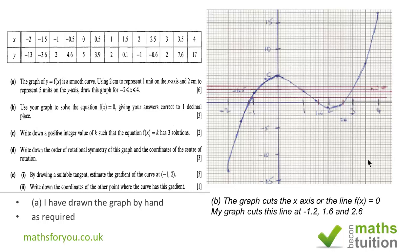For part B, it says use your graph to solve the equation f(x) equals zero. In effect, y equals zero, which is the x-axis. You need to find where the graph cuts the x-axis. So for my graph, I can see it's minus 1.2, 1.6, and then plus 2.6.